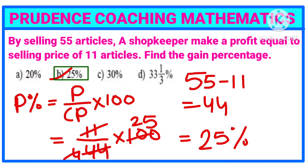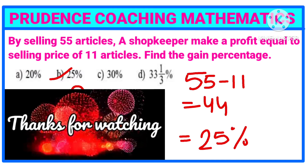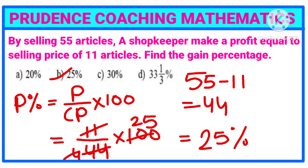Now I have a question for you — answer it in the comment box along with today's homework. Don't forget to comment the answer, as that is going to help you, and in the next class I am going to solve the homework. My question is: why are we doing 55 minus 11?